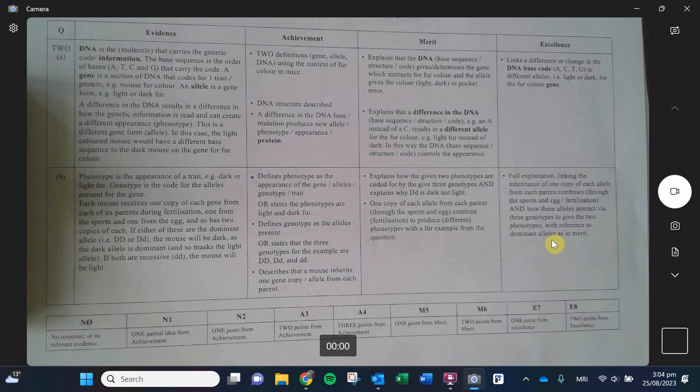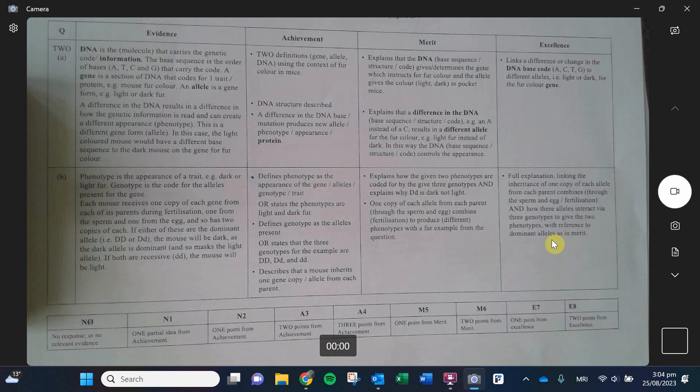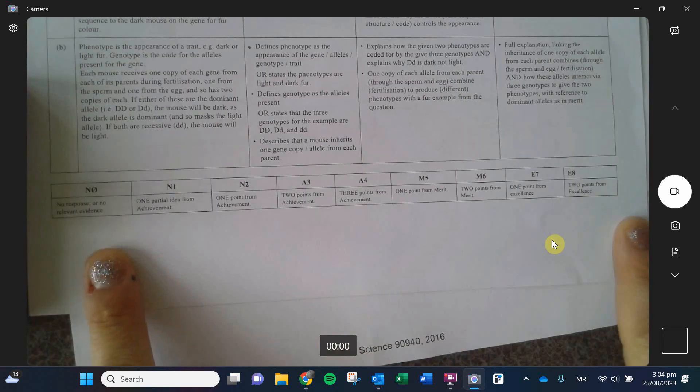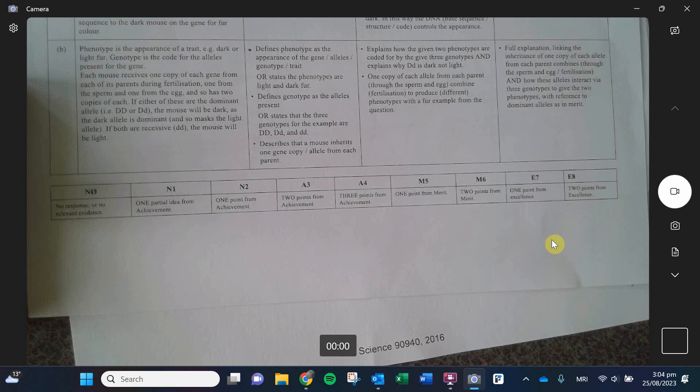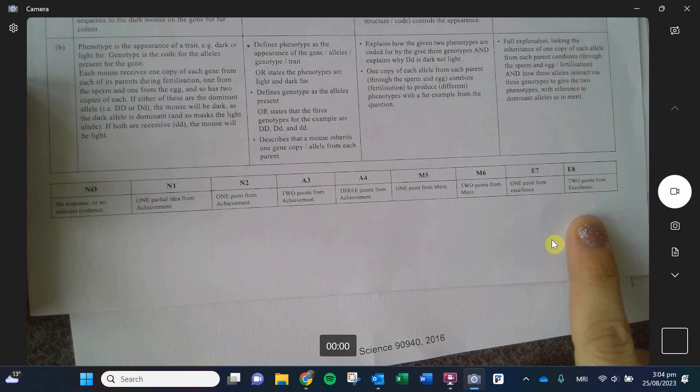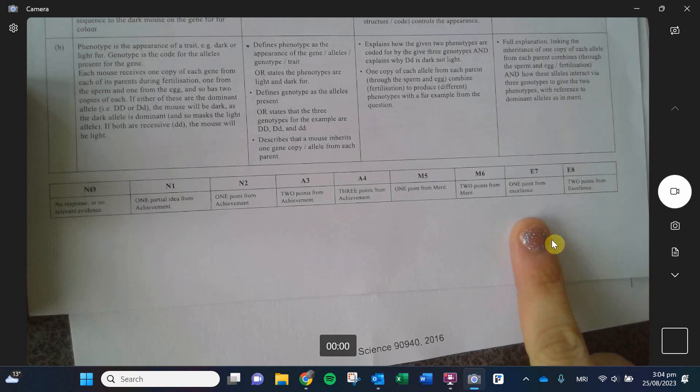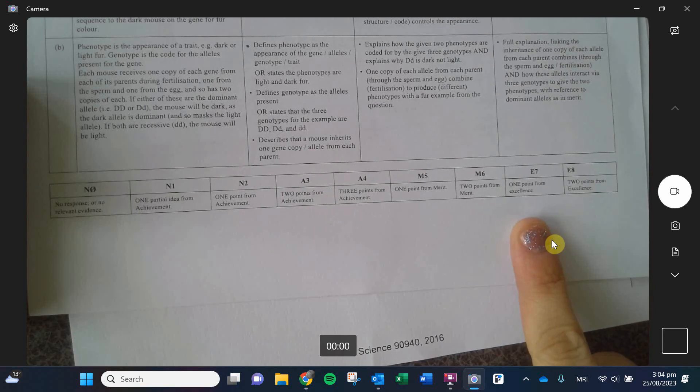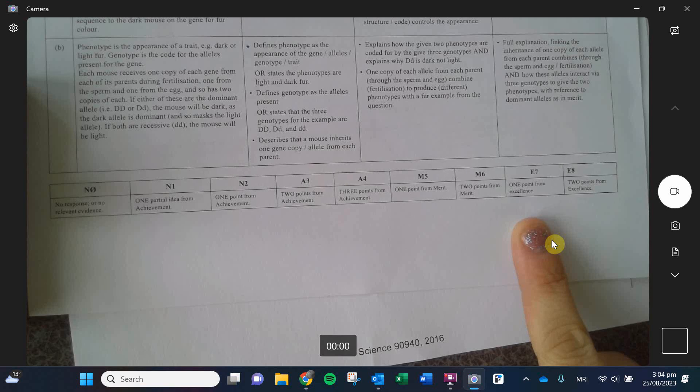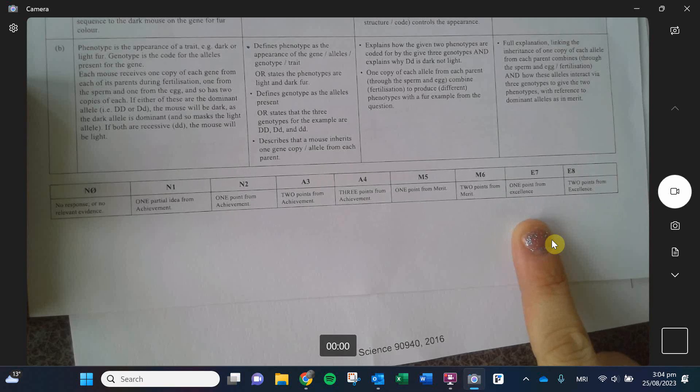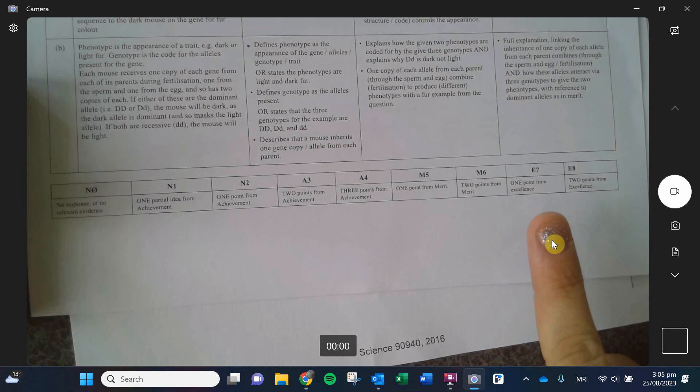They will always go top down. So they're going to look for the excellence level answer. And if it's not there, then they're going to see, did you answer it to the merit level? If you didn't answer it to the merit level, then they look for the achieve level. What they then do is they add up how many achieved merit and excellence points you have. And then at the bottom determines the point value for your question. Again, they do top down marking. So they look to see, do you have two excellence points? You don't? Do you have at least one excellence point? Oh, you do? Then you get an E7. Doesn't matter what the other points that you have. Top down.